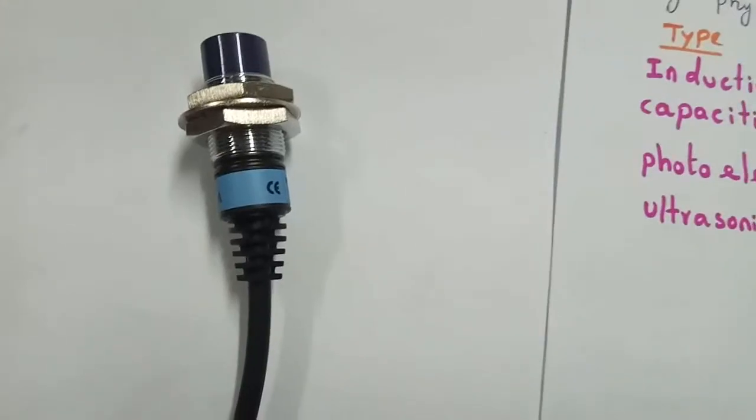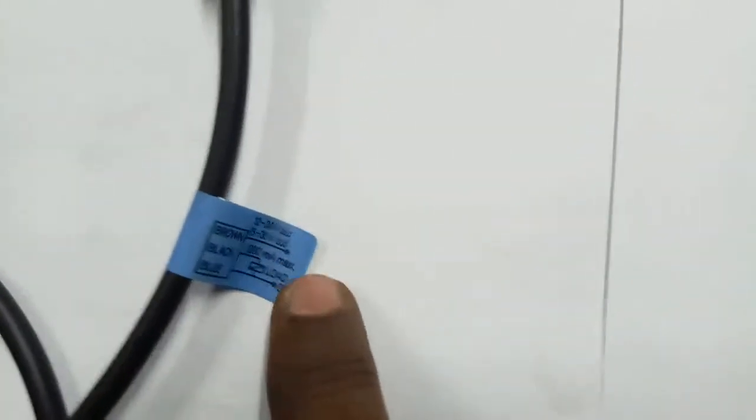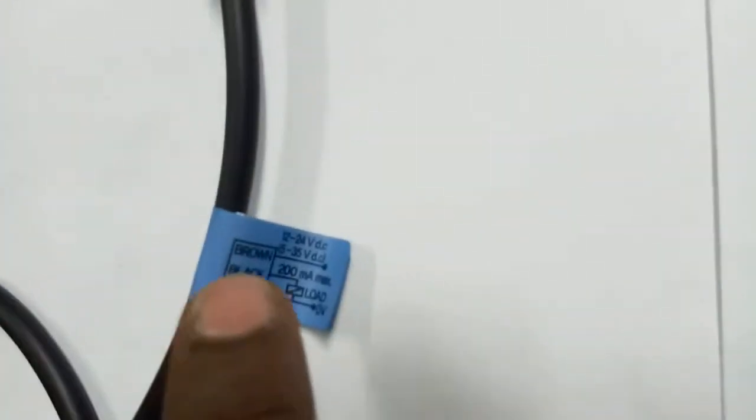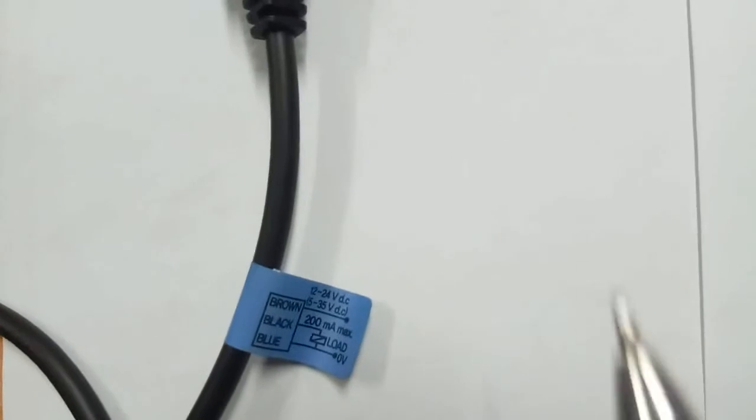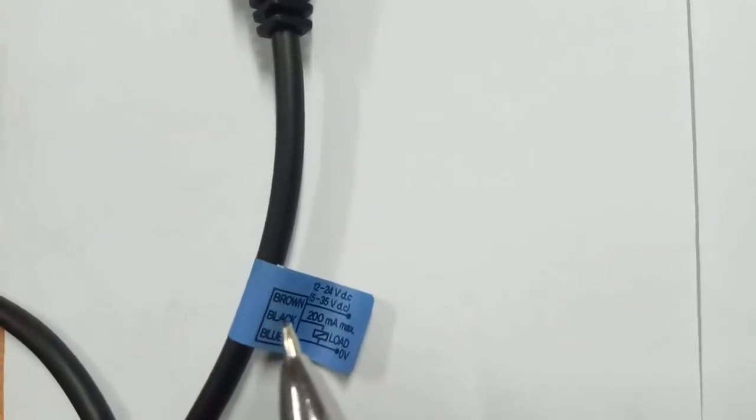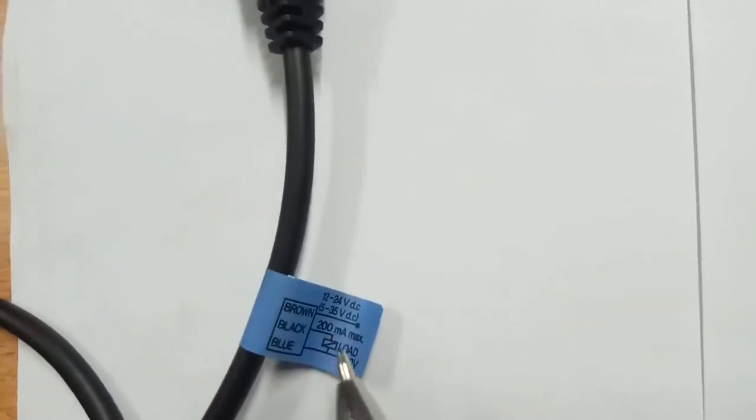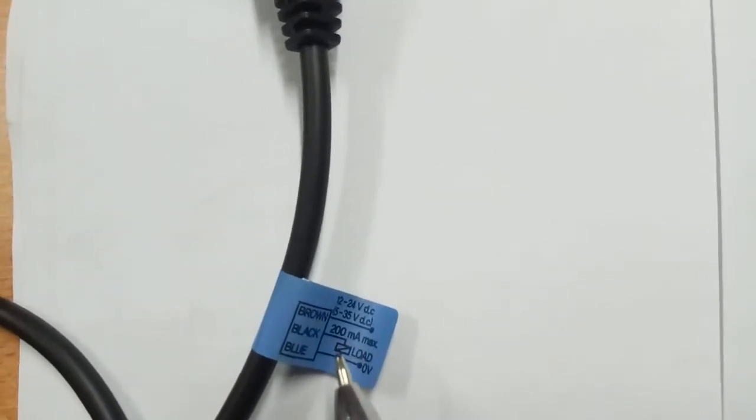This is the inductive Proximity Sensor. Black, blue, brown wire. Brown is positive, blue will be 24V DC negative, black is output. This should allow relay or PLC module. So you can allow it to get the connection.